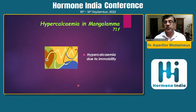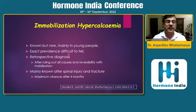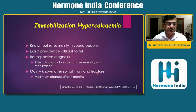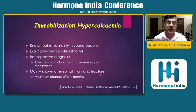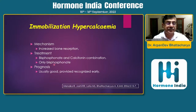So what is the diagnosis? Hypercalcemia related to immobility. It is a known but rare cause — I purposefully did not mention it in the rare classification table earlier. It mainly happens in young people and is commonly seen in those with spinal injury due to prolonged immobilization. Our patient also had a fracture and was on bed rest for a long time — 30 days in a different city and 40 days in Manipal — so she was immobile for more than two months. Maximum risk in the literature is around four months. It is a retrospective diagnosis after ruling out all other causes. Mechanism: increased bone resorption. Treatment: bisphosphonate. Prognosis is usually good if recognized early.